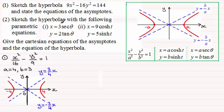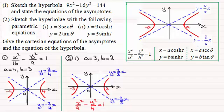So for the second one when I compare the trigonometric parametric form to what we've got here you can see that a is 3 and b is 2. And from that we should be able to sketch our hyperbola.